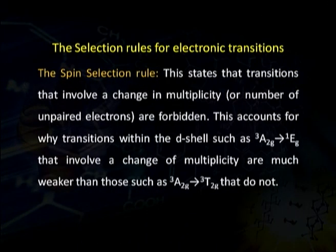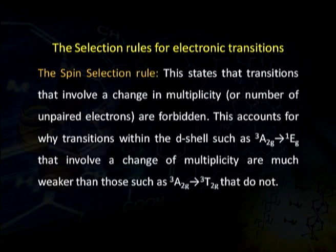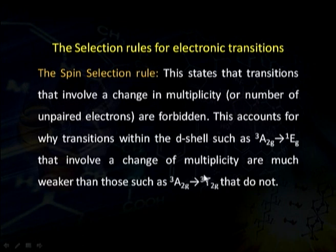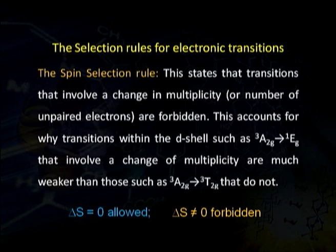The spin selection rule states that transitions that involve a change in multiplicity — the number of unpaired electrons — are forbidden. For example, a transition from ³A2g to ¹Eg involves a spin multiplicity change from 3 to 1. Transitions that involve a change in multiplicity are much weaker than those like ³A2g to ³T2g in which there is no spin multiplicity change. We can conclude that if ΔS = 0, transitions are allowed; if ΔS ≠ 0, transitions are forbidden.